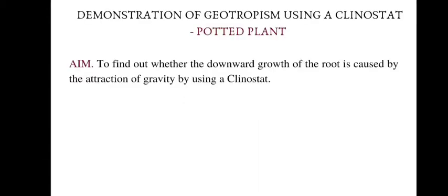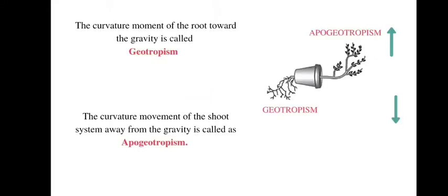In this experiment on geotropism, our aim is to find out whether the downward growth of the root — that is geotropism — is caused by the attraction of gravity, using an instrument known as a clinostat. The curvature movement of the root toward gravity is called geotropism, while the curvature movement of the shoot away from gravity is called apogeotropism.